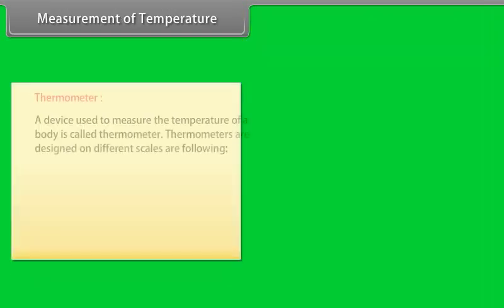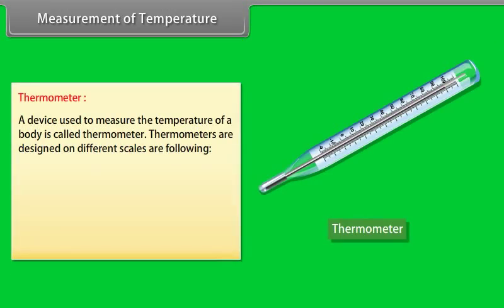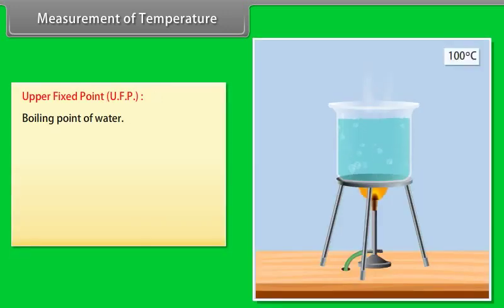Measurement of temperature: A device used to measure the temperature of a body is called a thermometer. Thermometers are designed on different scales: Celsius scale, Fahrenheit scale, Kelvin scale, and Reaumur scale. The boiling point of water is known as the upper fixed point.